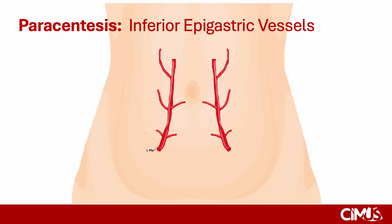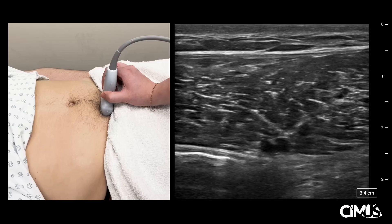Along its course, its branches supply various structures in the abdominal wall. To find the inferior epigastric vessels, use a high-frequency linear probe.